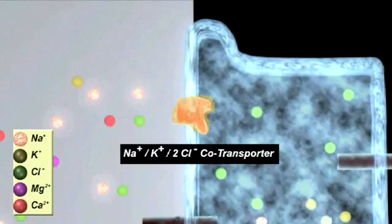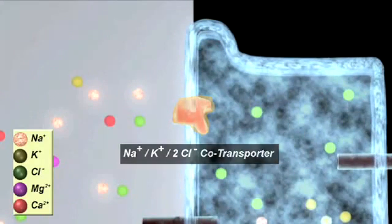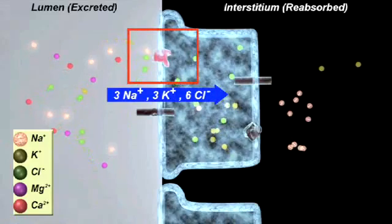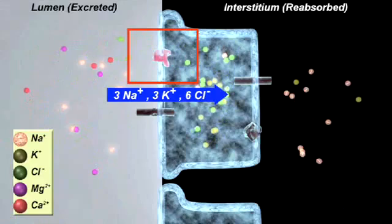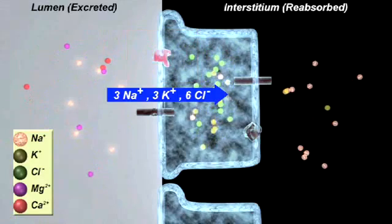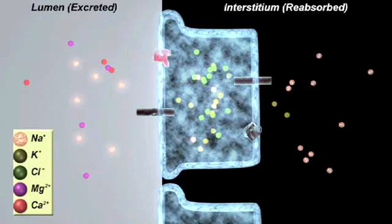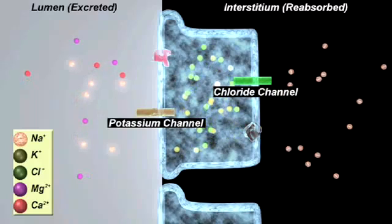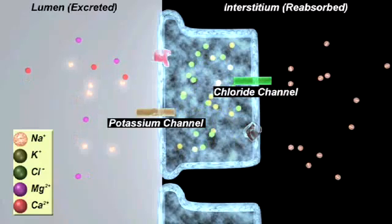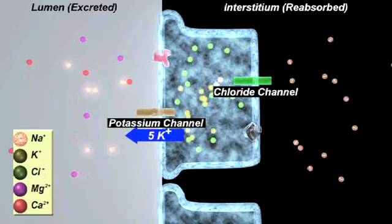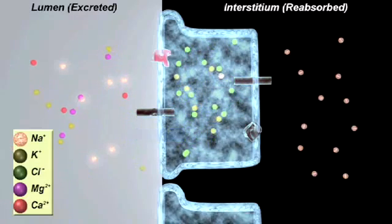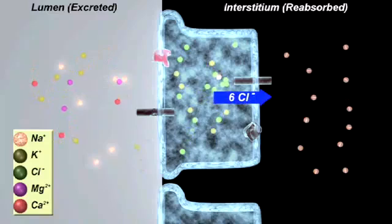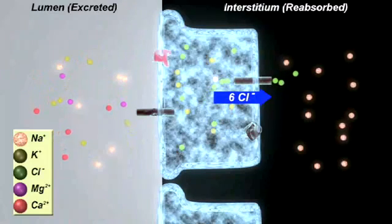This deficit is made up by the sodium-potassium chloride transporter on the luminal membrane of the cell. This transporter moves one sodium, one potassium, and two chloride ions from the lumen into the wall of the nephron. The potassium and chloride ions move down their concentration gradients through their respective channels. The potassium returns to the lumen through a potassium channel. The chloride is removed to the interstitium through a chloride channel.